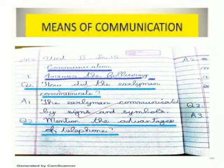Question 1: How did the early man communicate? The early man communicated by signs and simple means.